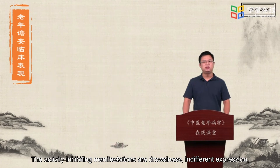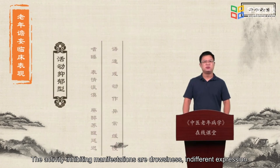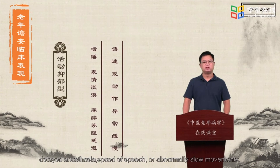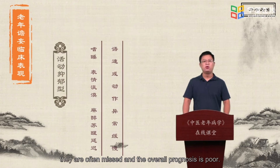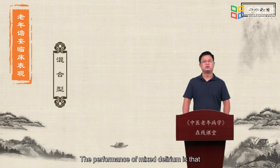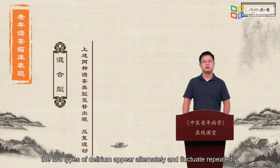The activity-inhibiting manifestations are drowsiness, indifferent expression, delayed response, slow speed of speech, or abnormally slow movements. Because the symptoms are difficult to detect, they are often missed and the overall prognosis is poor. The performance of mixed delirium is that the two types of delirium appear alternately and fluctuate repeatedly.